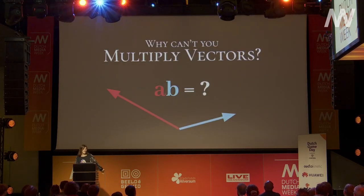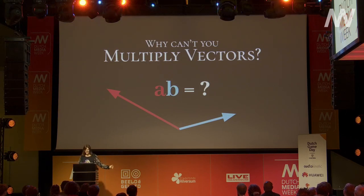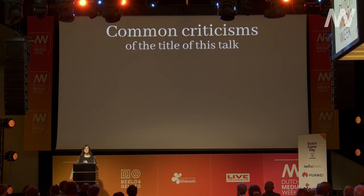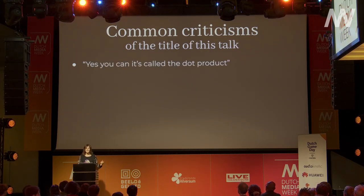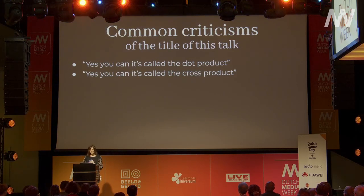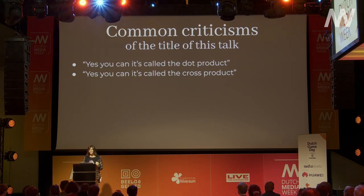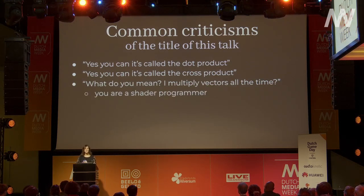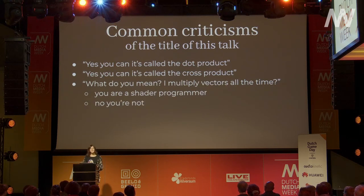In this talk we're going to explore why can't you multiply vectors? As with any talk, let's start with some common criticisms of the title. You might say: 'Yes you can, it's called a dot product.' Or: 'Yes you can, it's called a cross product.' Or: 'I multiply vectors all the time' — which could be early signs that you might be a shader programmer. But no, you're actually not really multiplying vectors, and you're going to find out why.